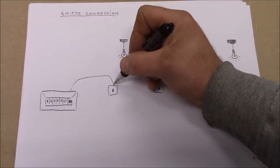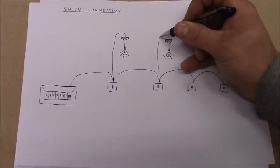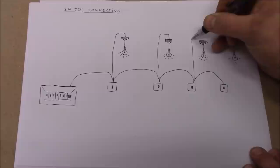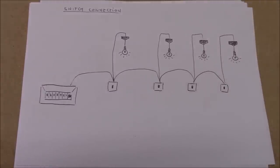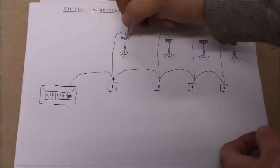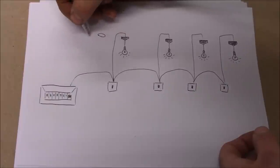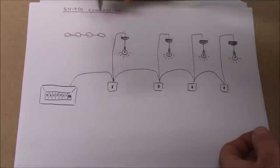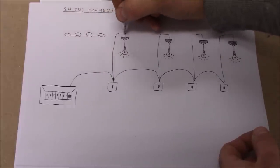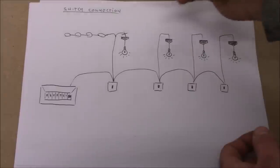In the future, if you don't want ceiling roses anymore and want spotlights — say four spotlights — you simply remove the ceiling rose, connect the spotlights to the wire already sticking out of the ceiling, and that's it. This makes the switch connection system very flexible for upgrades.